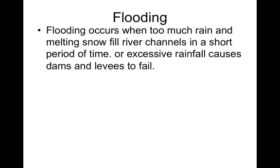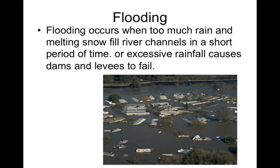Our last hazard is flooding. Flooding occurs when too much rain and melting snow fill river channels in a short period of time, or when an excessive amount of rainfall causes dams and levees to fail. California moves a lot of water from northern to southern California through aqueducts, dams, and levees that hold water back — and sometimes those fail, leading to flooding situations.